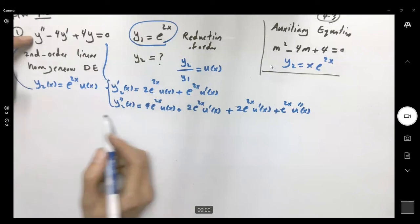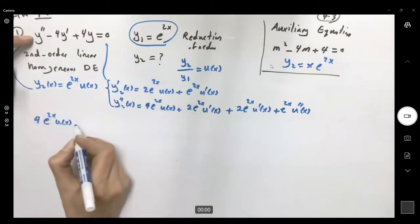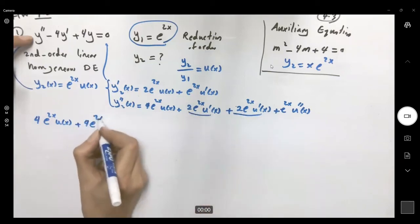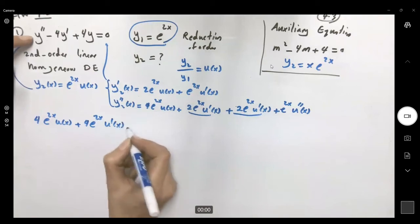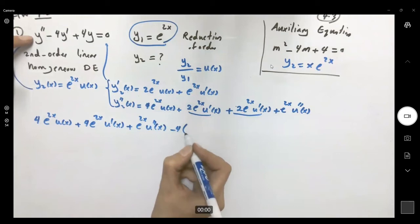The second derivative, 4 e to 2x u of x plus, if you combine these two, you get 4 e to 2x u prime of x plus e to 2x u double prime of x minus four parentheses.